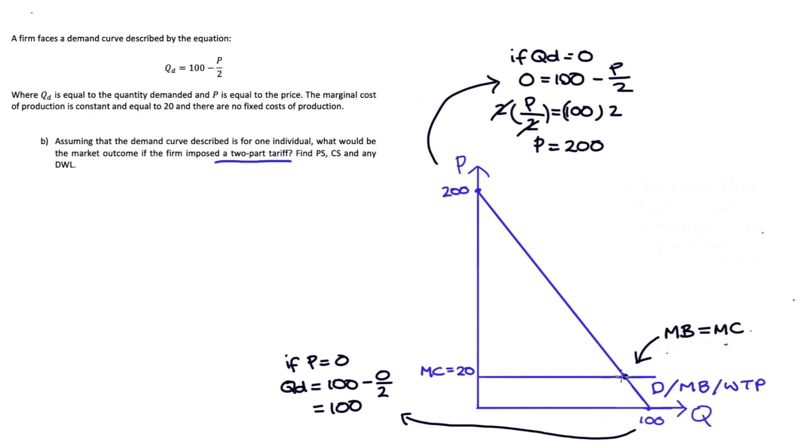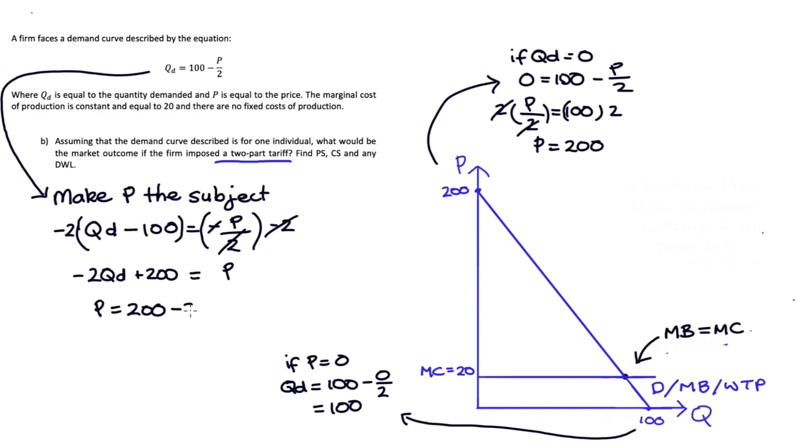To find the quantity associated with this intersection, before I set marginal cost equal to demand, I'm first going to work with our demand equation and make price the subject. Working with our demand equation, I can first take 100 away from both sides, giving QD minus 100 equals negative P on two. Then multiply both sides by negative two, and I get P equals 200 minus two times QD.